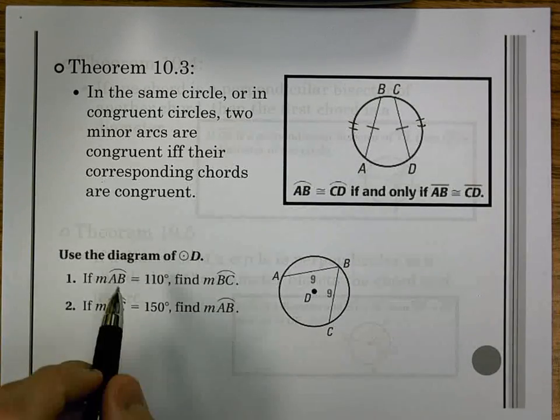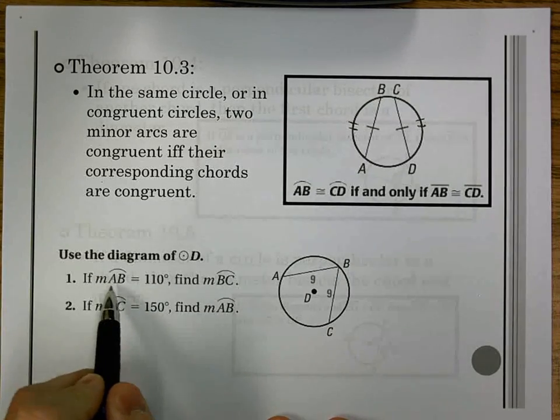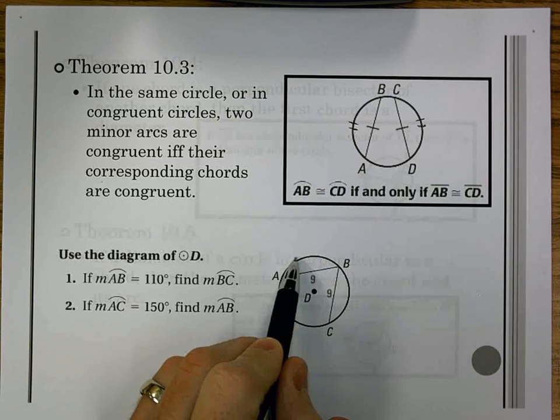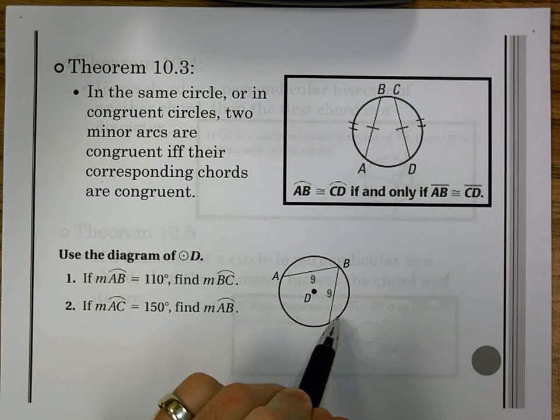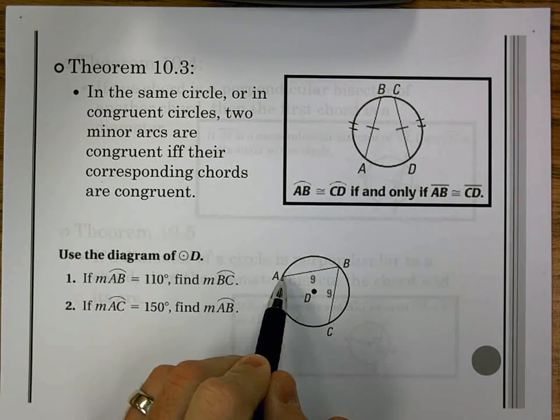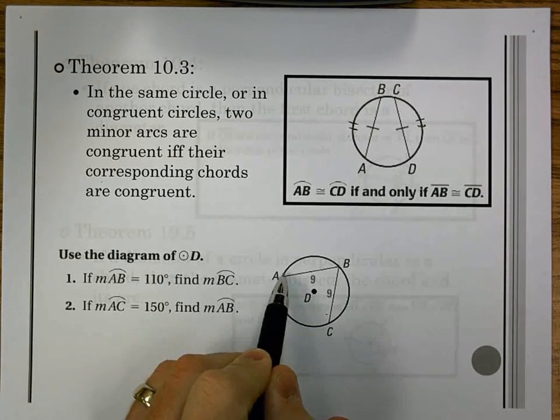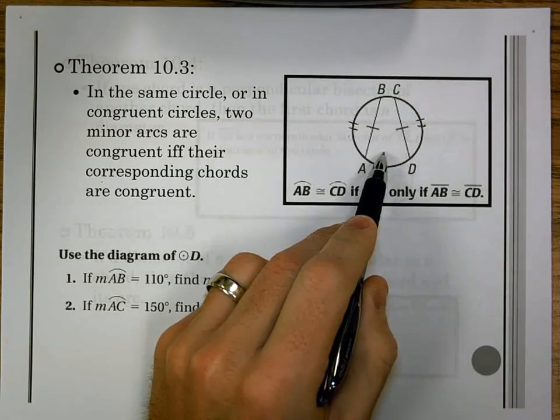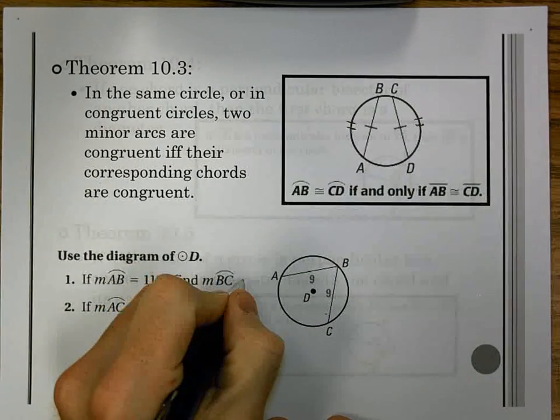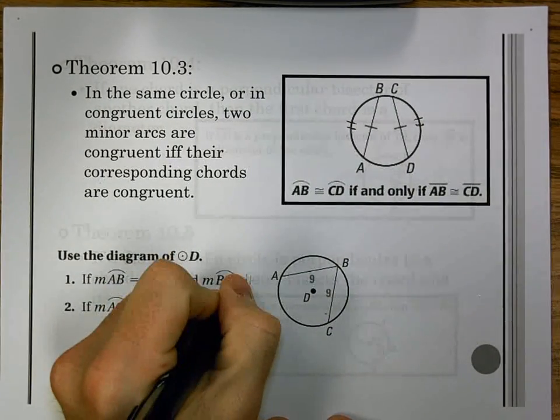We look at the example and applying that. In the first one I have that arc AB is 110 degrees. Well, you know what BC is. Since the chord from A to B and the chord from B to C are the same, that means the arcs are the same. Same idea we just had right here. So BC would be 110.